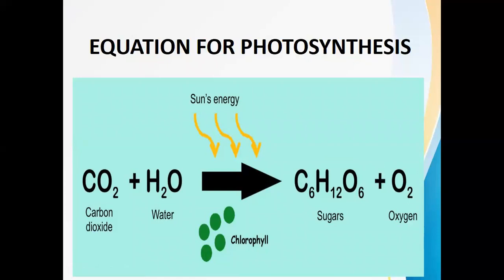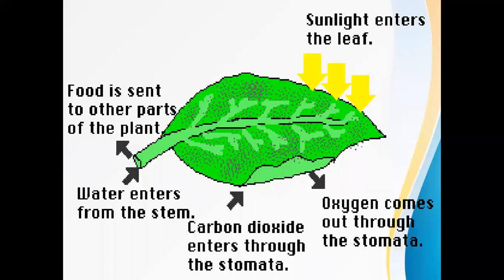Oxygen is released as the waste product during photosynthesis. This is a very important point you should remember: the waste product of photosynthesis is oxygen. Now look at this slide — this slide shows how photosynthesis occurs in a leaf. Sunlight enters the leaf.